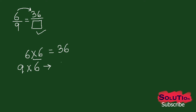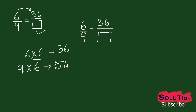So 9 times 6 is 54. We can write 6 by 9 equals 36 by 54, and in the box we write 54.